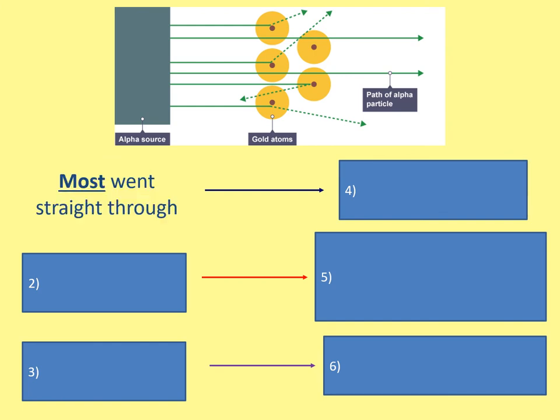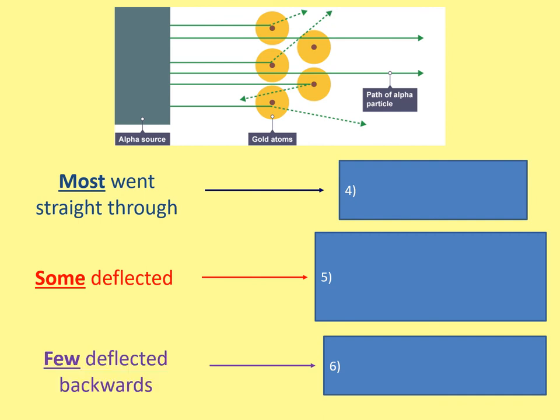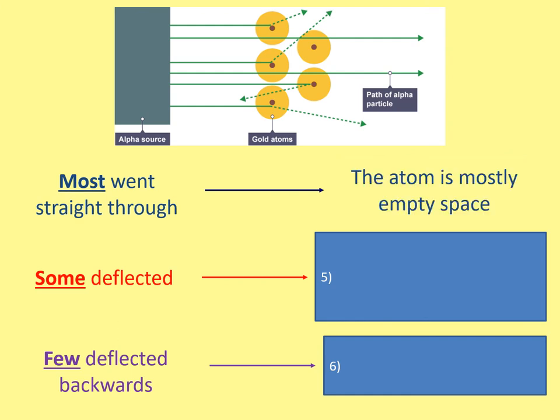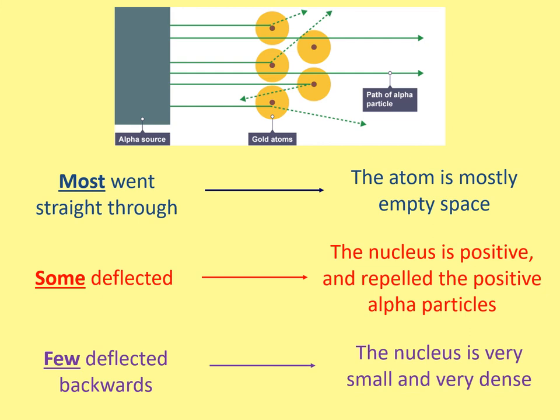The three results were: most alpha particles went straight through; some deflected; and few deflected backwards. The three conclusions were: the atom is mostly empty space; the nucleus is positive; and the nucleus is very small and very dense.